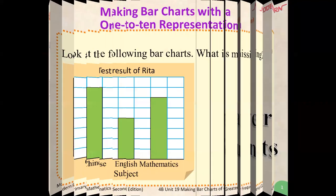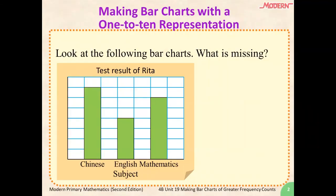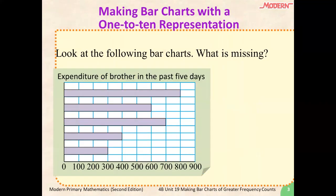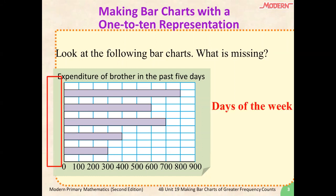Let's take a look at the following bar chart. What is missing from this bar chart? The answer is, it's missing the marks of Rita. Did you get it correct? Let's take a look at another bar chart. What is missing from this bar chart? The answer is, it's missing the days of the week. Did you get it correct?